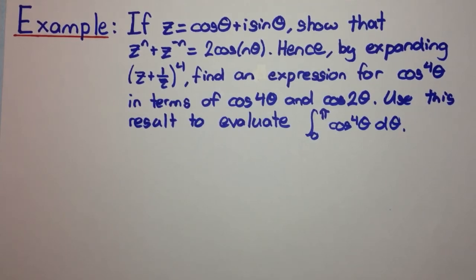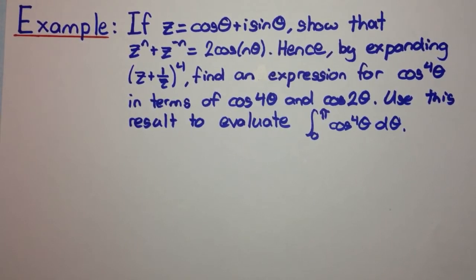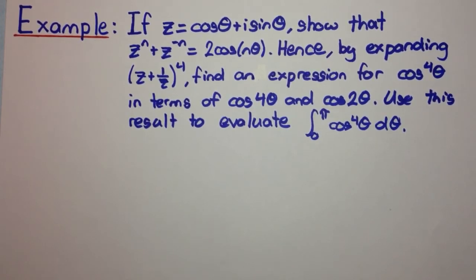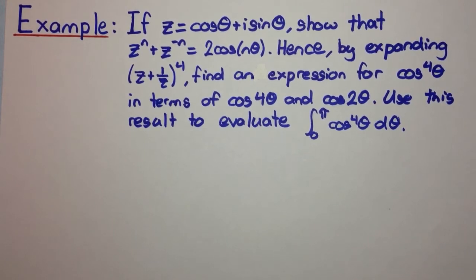Welcome to another example of applying De Moivre's theorem to solve a question. This example says: if z equals cos θ plus i sin θ, show that z^n plus z^(-n) equals 2cos(nθ). Hence, by expanding (z + 1/z)^4, find an expression for cos^4θ in terms of cos 4θ and cos 2θ. Then use this result to evaluate the integral from 0 to π of cos^4θ dθ.